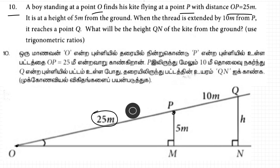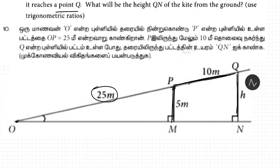It is at a height of 5 meters from the ground, PM equal to 5 meters. When the thread is extended by 10 meters from P, it reaches point Q. What will be the height QN? Use trigonometric ratios.